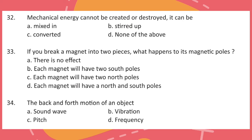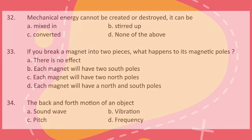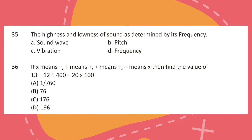Question 33. If you break a magnet into two pieces, what happens to its magnetic poles? Question 34. The back and forth motion of an object is called what? Question 35. The highness and lowness of sound as determined by its frequency is called what?